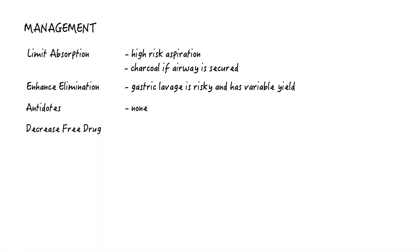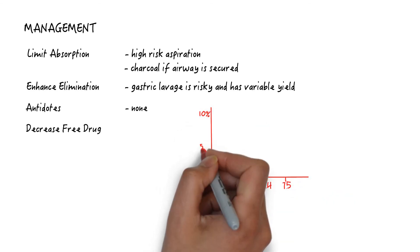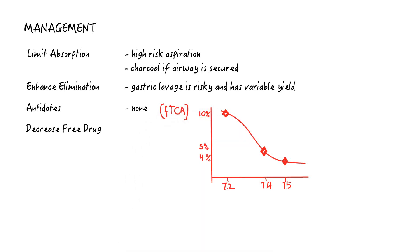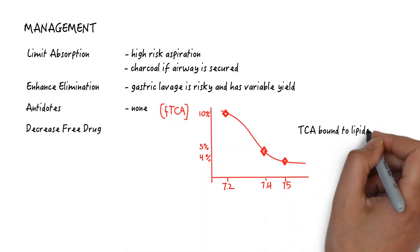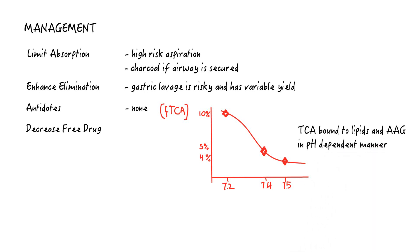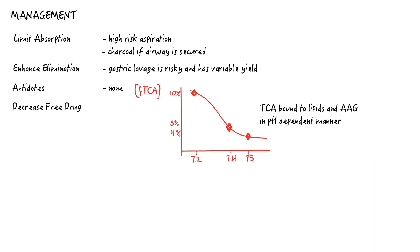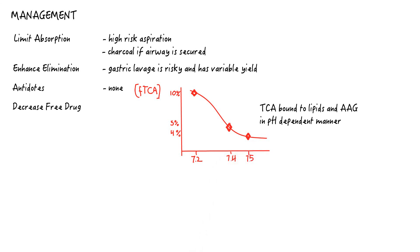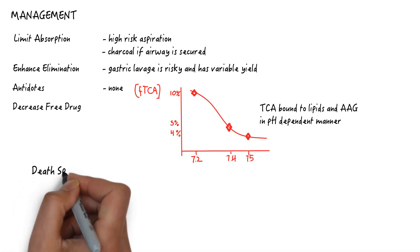And decrease free drug. This is reserved for the most serious of overdoses when we have limited other interventions. TCA is predominantly bound to lipids and AAG protein in the serum in a pH-dependent manner. At a normal pH of 7.4, only 5% of TCA exists in the free drug. This can double to 10% at a pH of 7.2 and decreases marginally with alkalinization. This is yet another reason why TCA toxicity is so dangerous. It generates a death spiral.